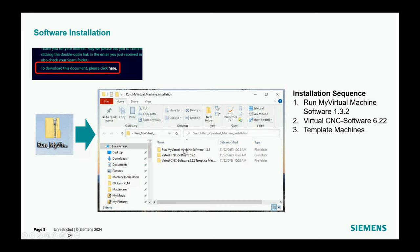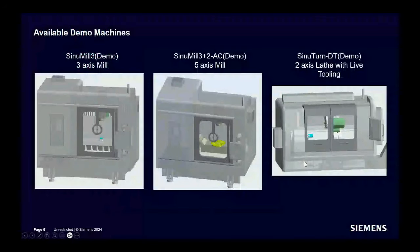You're going to see three pieces of software in that zip file. First is Run My Virtual Machine — what I like to call the workbench, similar to the old Sineutrain environment where you had all your machine environments and could launch different machines. Then you install the CNC software, which gives you the control software and all its benefits. And then you install the template machines. I always go in that order: Run My Virtual Machine, then CNC software, then template machines. There will be a couple reboots as you go through the process.